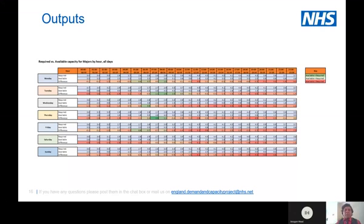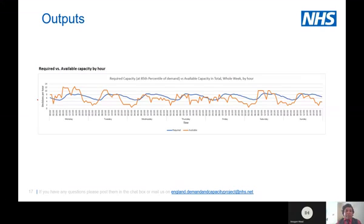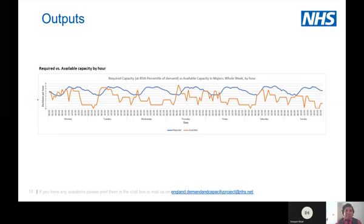The more red it is, the greater the mismatch you can look into. In addition to the heat map, we have charts displaying the same information in a slightly different way. We're looking at the whole department — available versus required capacity for the next week — by hour of day and day of week. We can also drill down to individual streams, dependencies, or urgencies. For example, we can look at this information for the next week by hour of day specifically for majors.